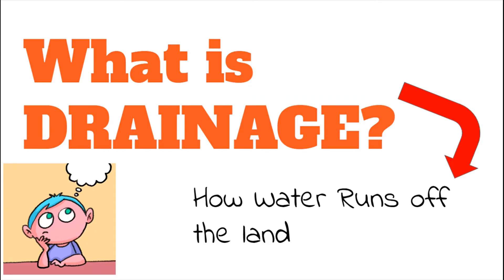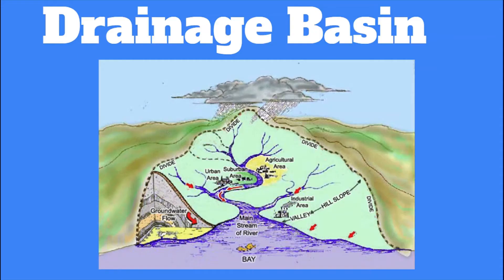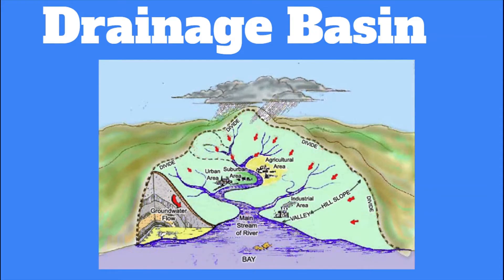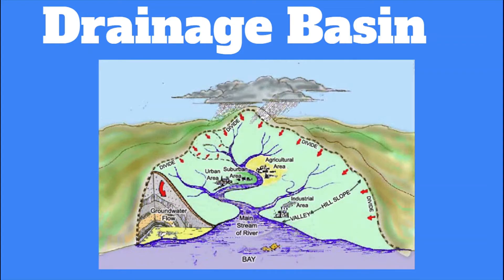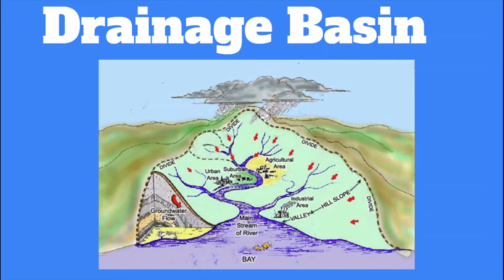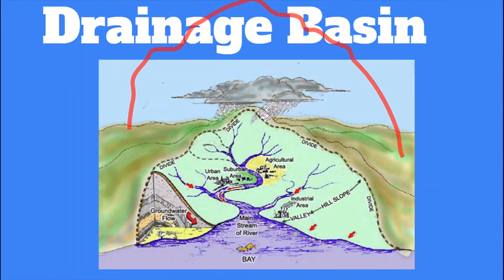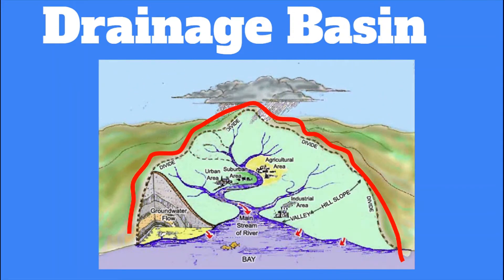The entire area of land where the water is running from, to join the specific river, would be called the drainage basin. This can also be looked at as a catchment area. In this case, our catchment area would have been this entire area here in red.